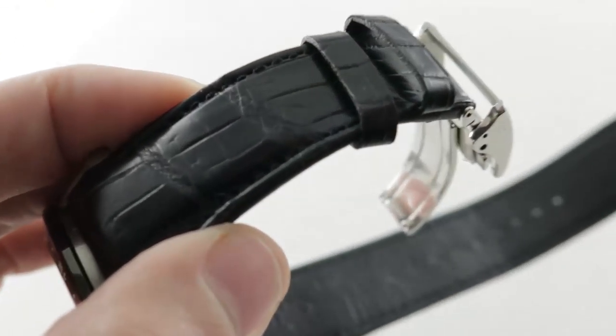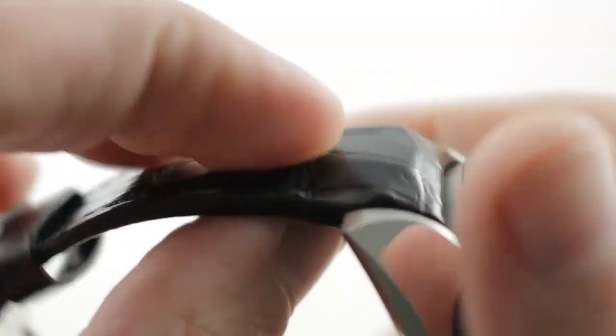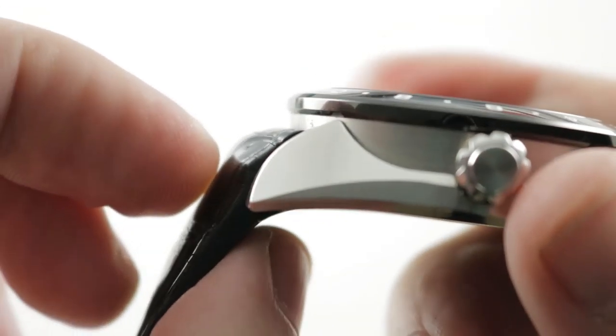The factory strap lives up to the luxury pretensions of the model itself. It is a medium rectangular scale alligator leather in a semi-gloss finish. It's generously bolstered where it approaches the lugs so you can see how it swells to match the swell of the lugs themselves.